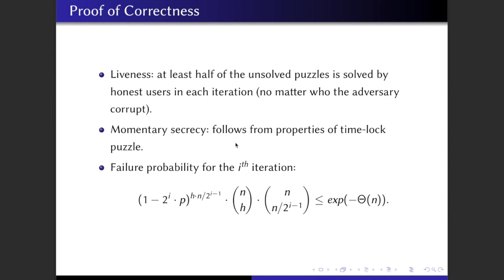So in fact, we can bound the failure probability for the i-th iteration using these equations below. Let's not go into the details here, it's just enough to know that this is a combination of probability analysis and then doing union bound over all the set of possible honest users and all the set of unsolved puzzles.